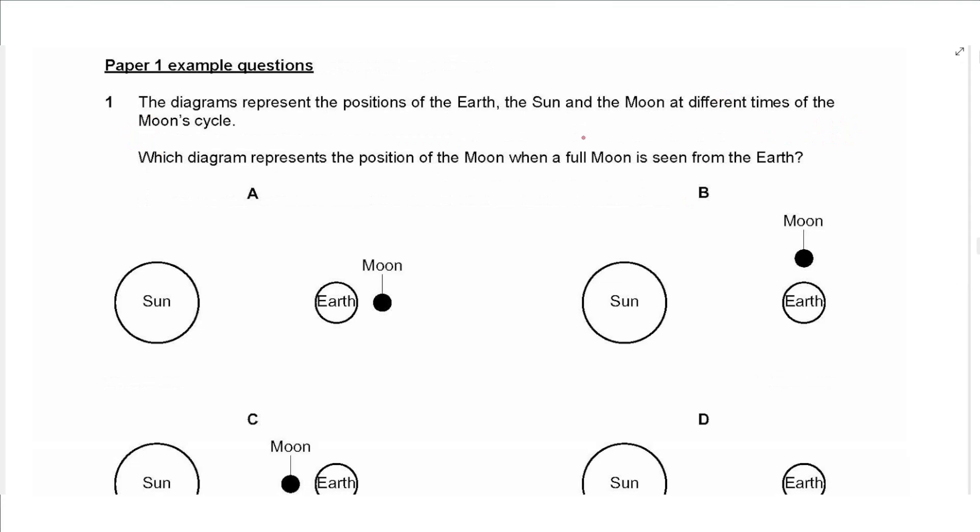Here are some other questions from another file. The first question says, the diagram represents the positions of the Earth, the sun, and the moon at different times of the moon cycle. Which diagram represents the position of the moon when a full moon is seen from the Earth? For a full moon, the total surface of the moon must be illuminated, which means the Earth is actually in between the moon and the sun. So the answer is C. All light coming from the sun falls on the surface of the moon and then reflects on the surface of the Earth.